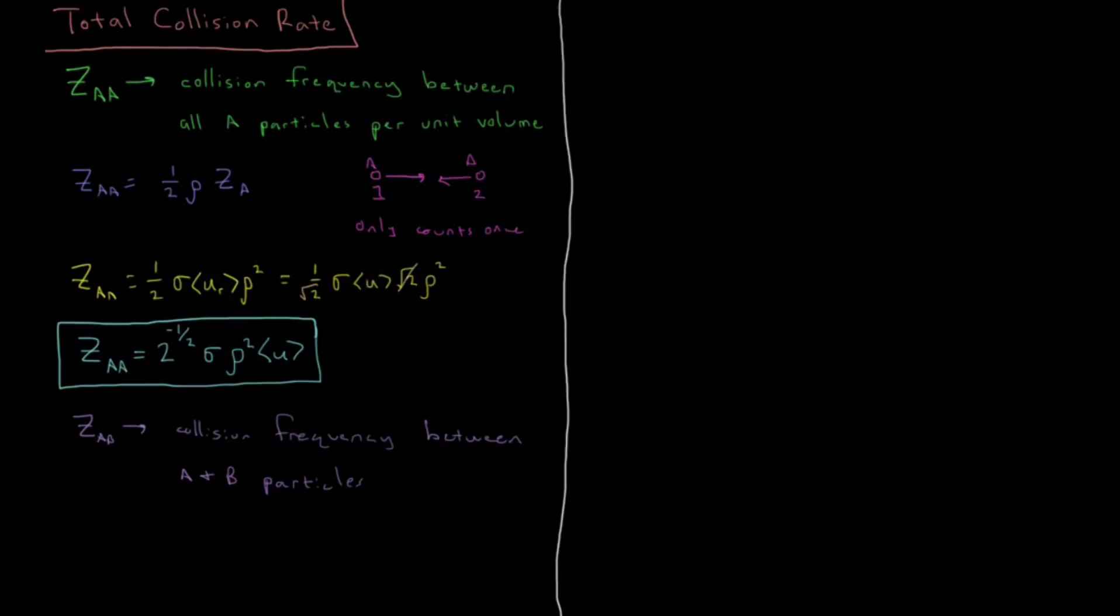So what would we replace in this derivation here in order to calculate ZAB? What we are going to lose is we are not going to have this factor of the relative mass to each other. We are not going to have this factor of double counting. And instead of density here we are going to have one of these is going to be the density of A and one of them is going to be the density of B.